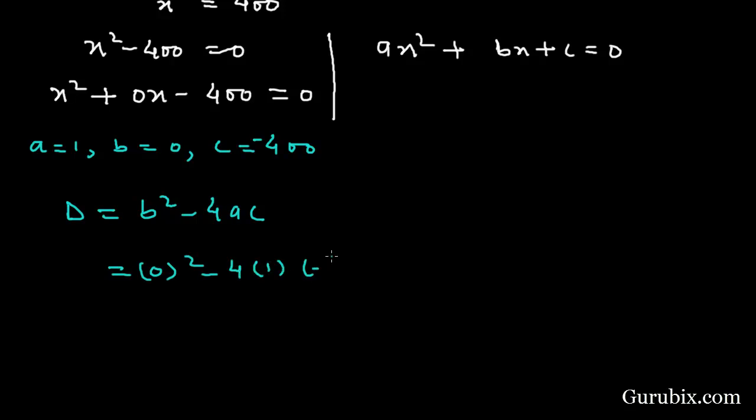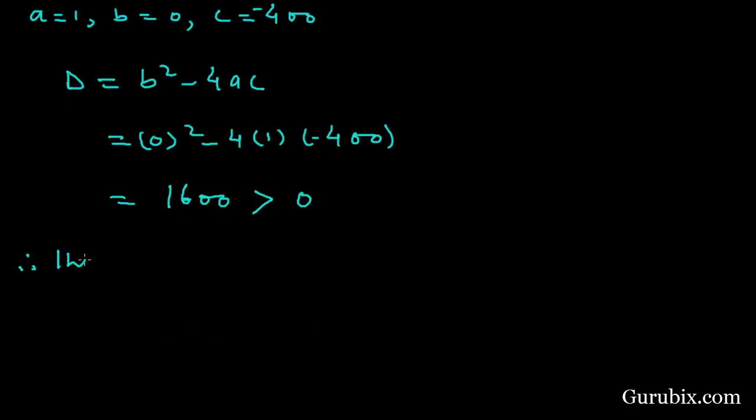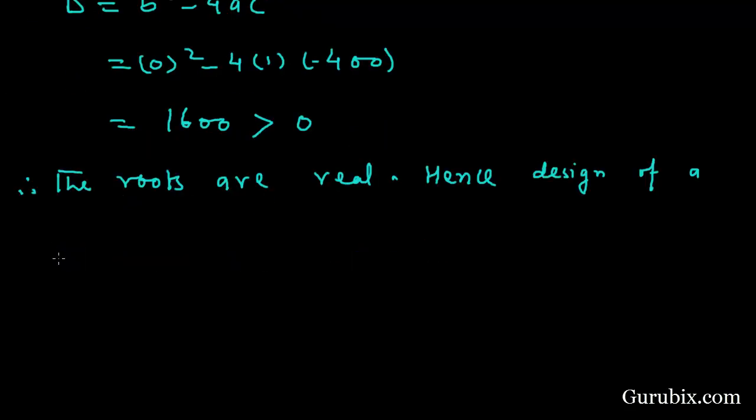So if we find the discriminant, that is b squared minus 4ac. B is 0, a is 1, c is minus 400. This means this equals 1600, which is greater than 0. Therefore, the roots are real.